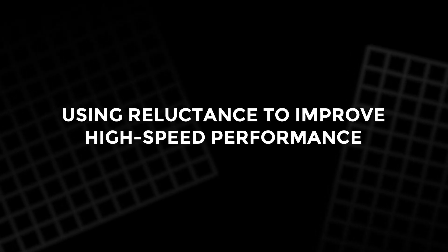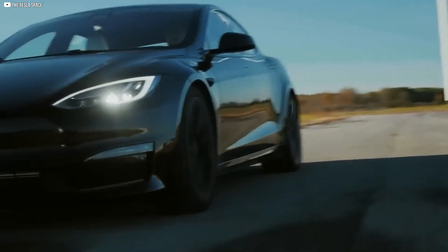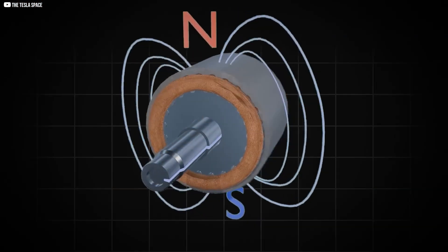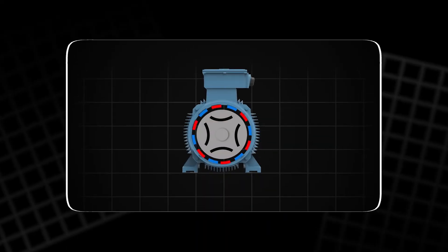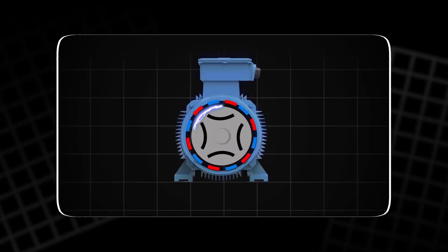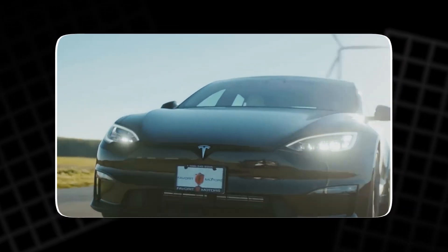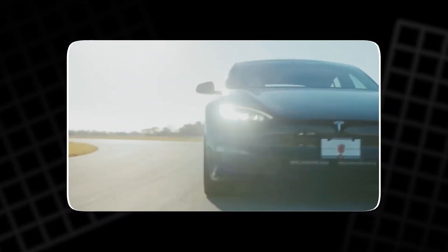Using reluctance to improve high speed performance, Tesla's engineers addressed this problem by turning to a different physical phenomenon – reluctance. Reluctance is the tendency of magnetic fields to prefer flowing through materials that are good conductors of magnetism, like iron, instead of poor ones, like air.